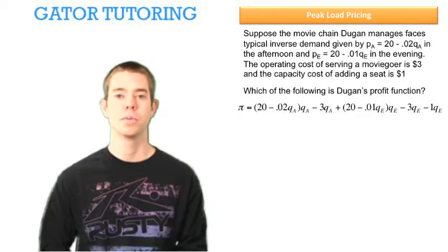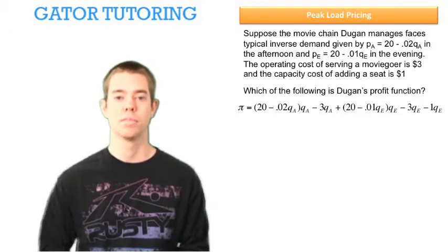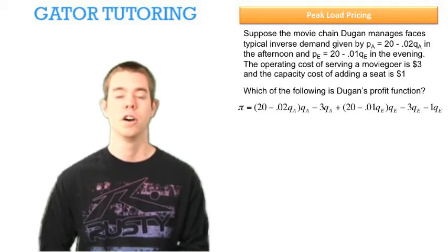And with our peak period, we're not only going to have our marginal cost of minus 3 QE, but we're also going to have our additional capacity cost of minus 1 QE.